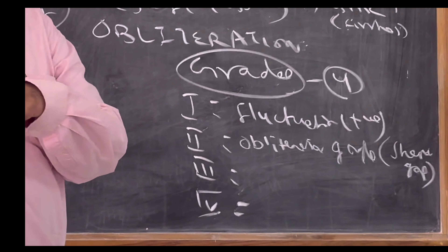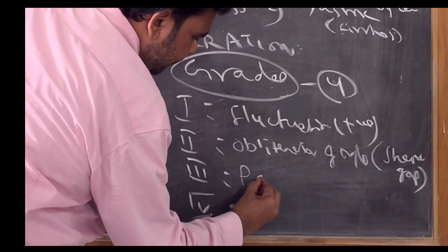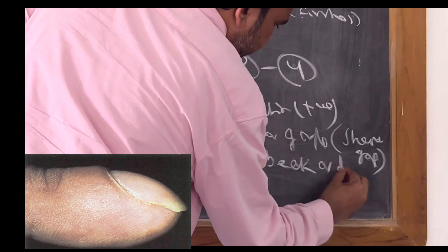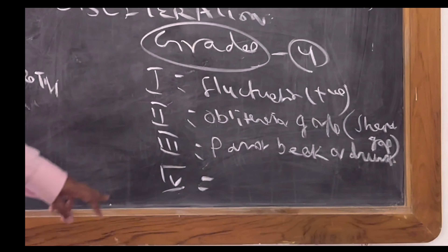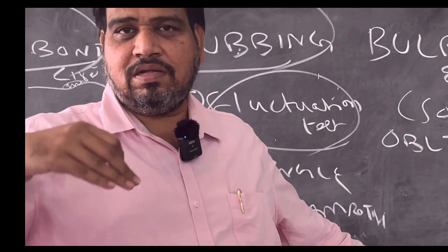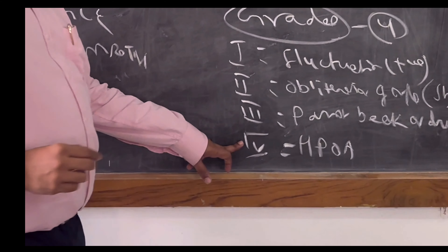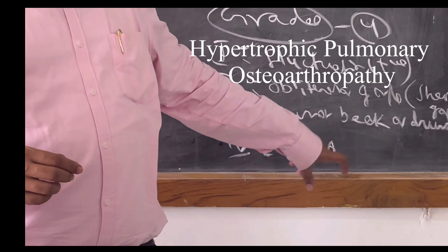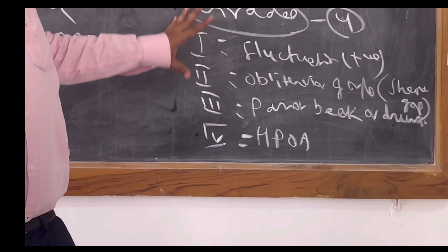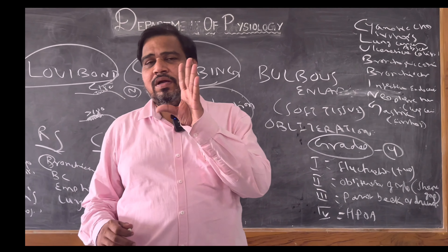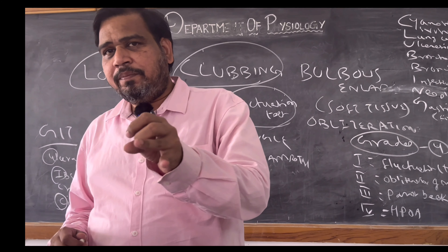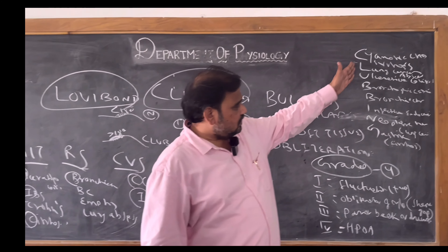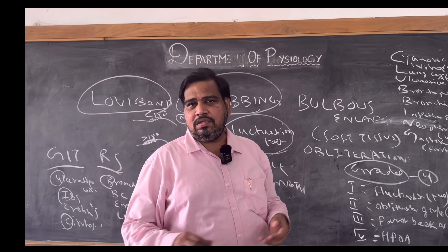Grade 4 is the last and most advanced stage of clubbing — Hypertrophic Pulmonary Osteoarthropathy (HPOA). So there are 4 gradings of clubbing. In today's video, I discussed what is clubbing, causes of clubbing, the various systems — CVS, RS, GIT causes of clubbing — the mnemonic CLUBBING, and how to test clubbing with the subject.